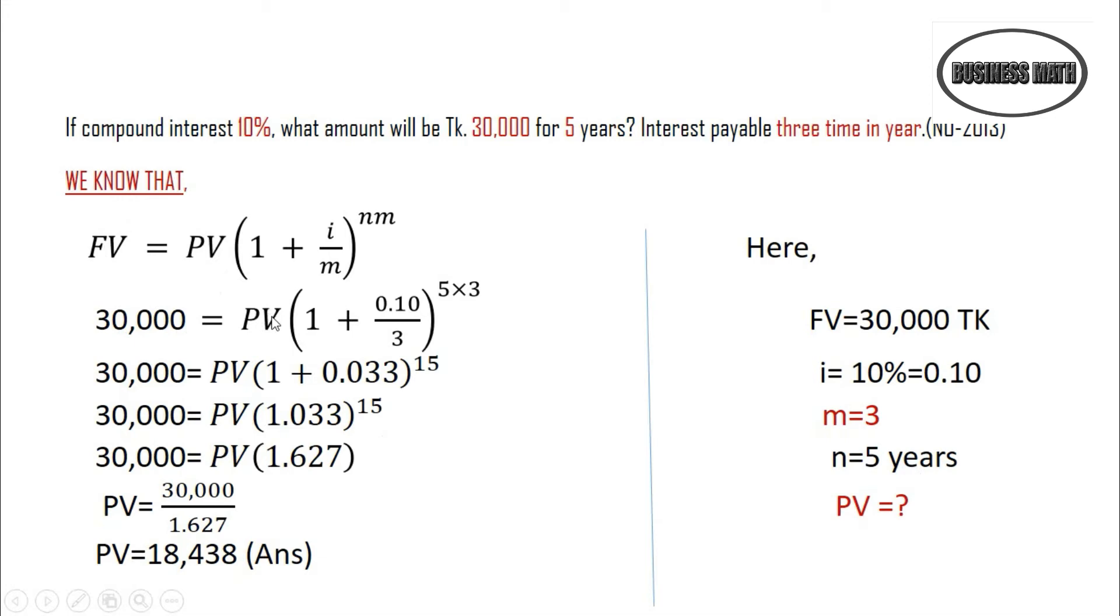Now, PV is what we're solving for. i is equal to 0.10, m is equal to 3, and n times m is equal to 5 times 3, which equals 15.